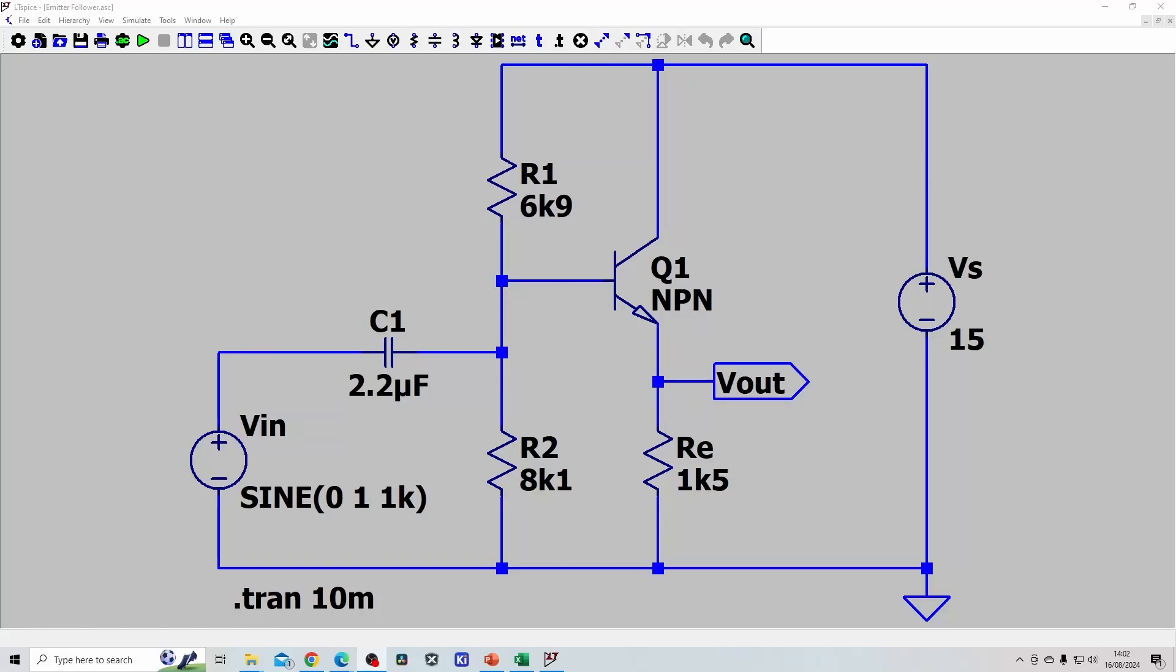Hello there, today I'm going to show you how to calculate the component values for this circuit which is an AC coupled emitter follower. Obviously we've got three resistors and a capacitor to calculate.